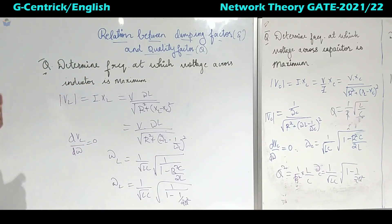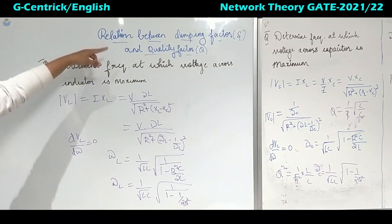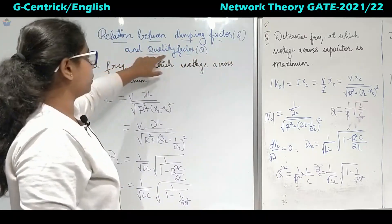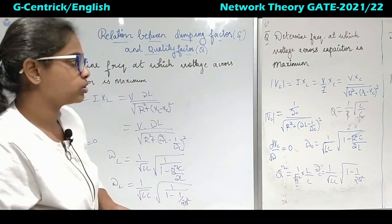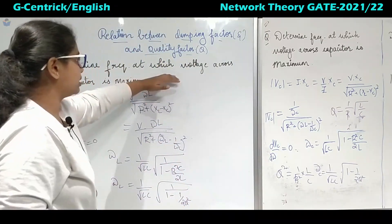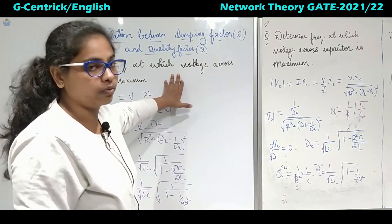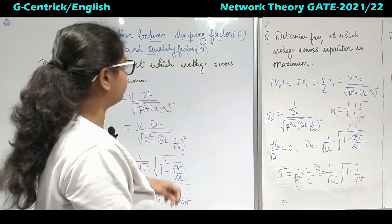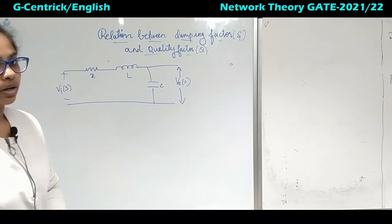Whenever you need to find a maximum or minimum value, differentiate with respect to that parameter and equate to zero. Now we will come to the relation between damping factor zeta and quality factor Q. This damping factor is very helpful in control systems. Since we are studying network theory, we will only see how much it is related here. More detail will be covered when you study control systems.